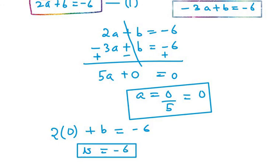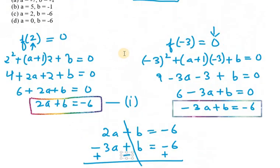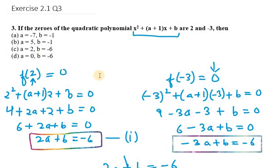So that's your answer for question number 3. So the right option is a = 0 and b = -6, that is option b. Thank you for watching this video.